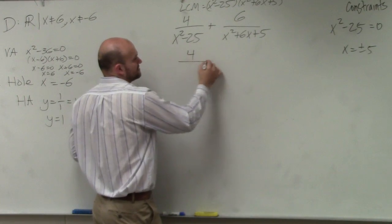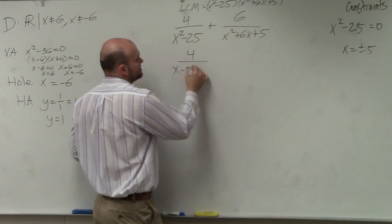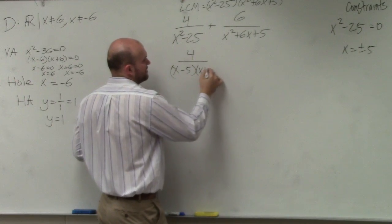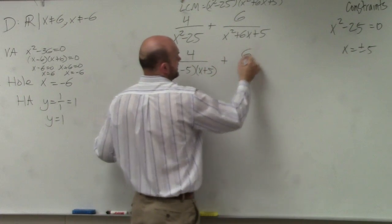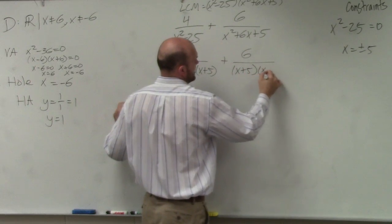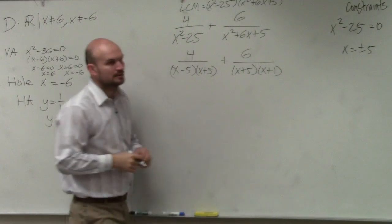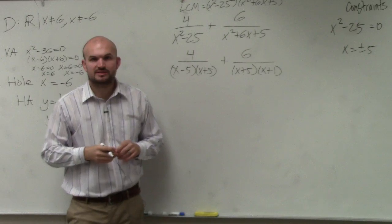When I factor, simplify by factoring, I get x minus 5 times x plus 5 plus 6 over x plus 5 times x plus 1. Does everybody see what I did?